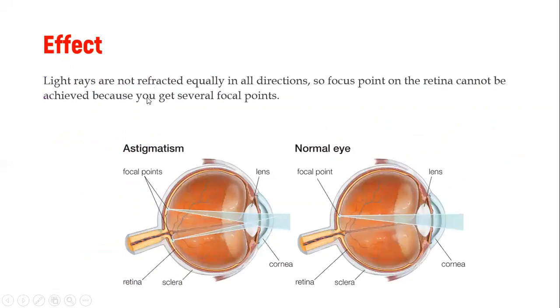So the effect of any of those types we have just discussed is that light is not refracted at one focal point, so in different directions. So the focus point on the retina cannot be achieved because of the several focal points. So this is what normally we should have, the cornea and the lens bending light and focusing at one focal point. But as you can see, in this case of astigmatism, you have different focal points where light is focused. Therefore, the image will not be as clear as we want.